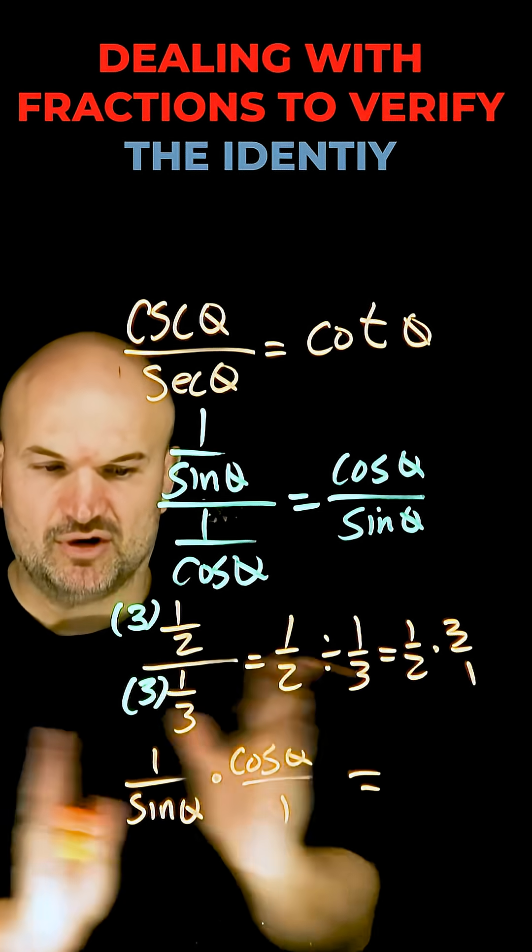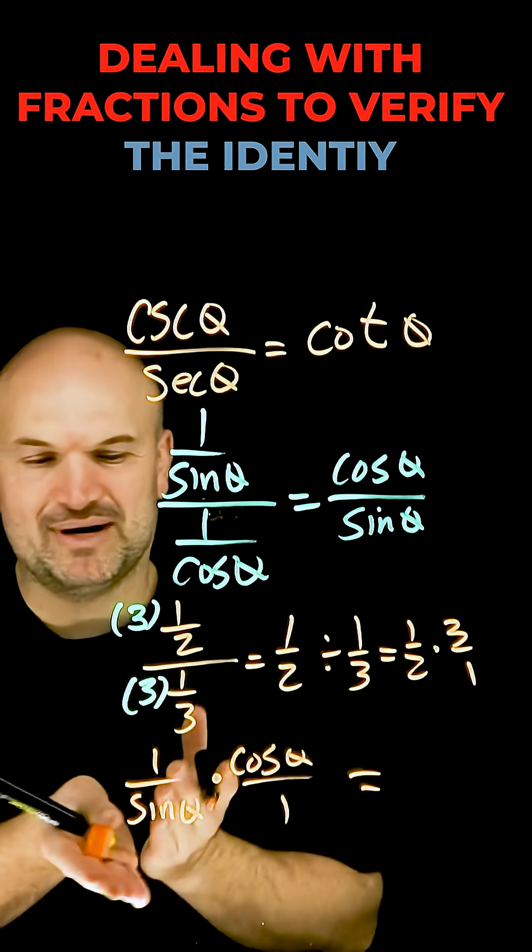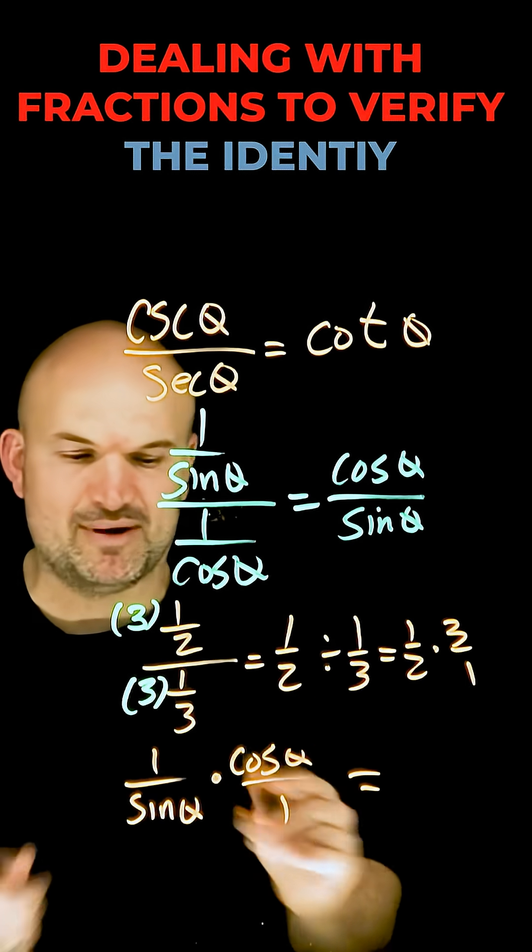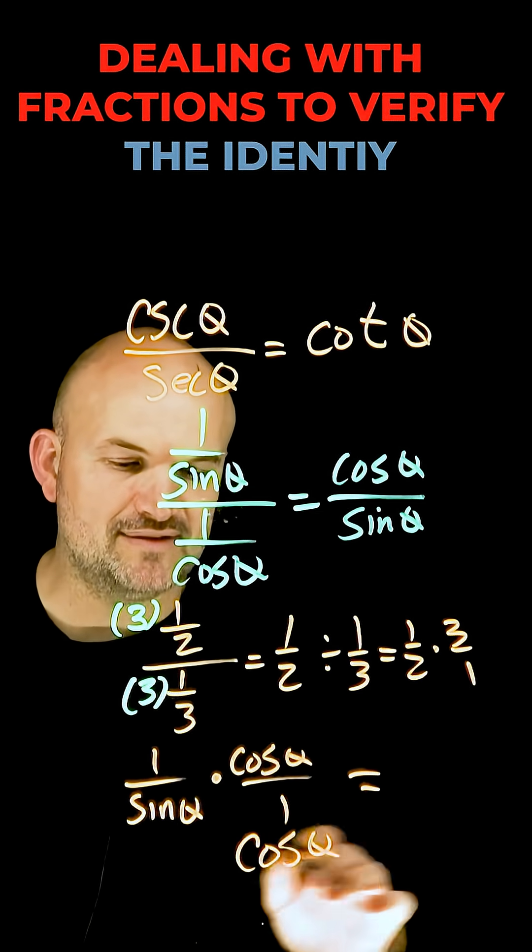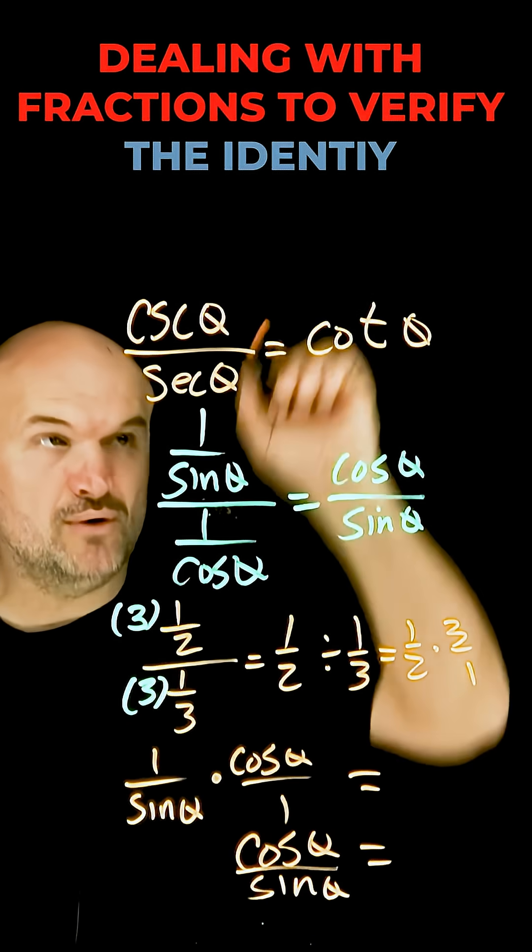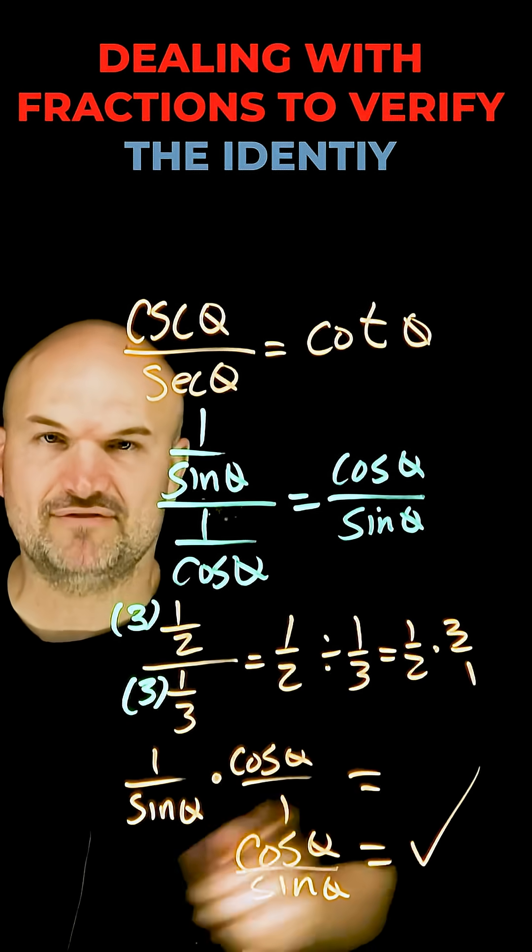Now we just multiply these across, and since the numerator and denominator of each fraction is multiplied by one, I'm going to get cosine of theta over sine of theta, which we know equals cotangent of theta.